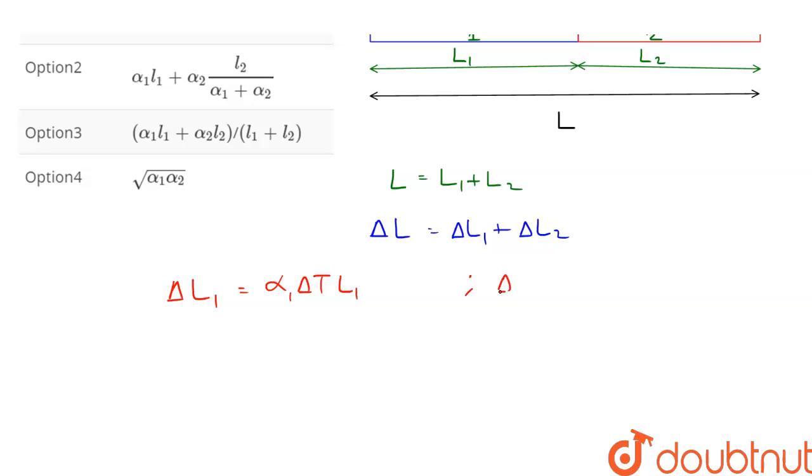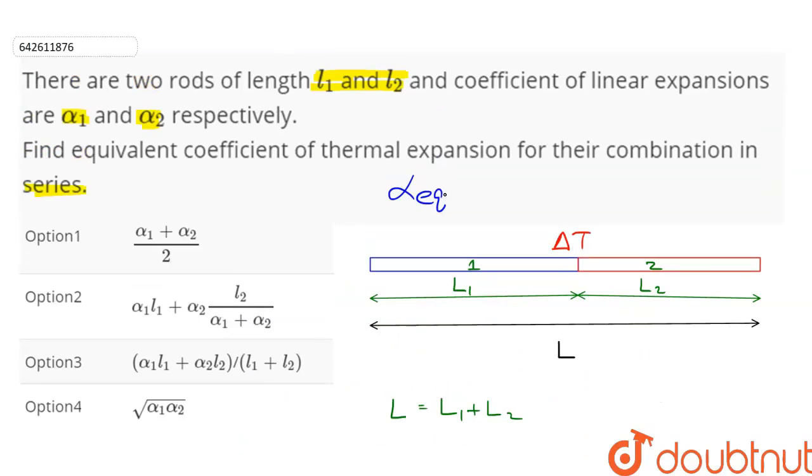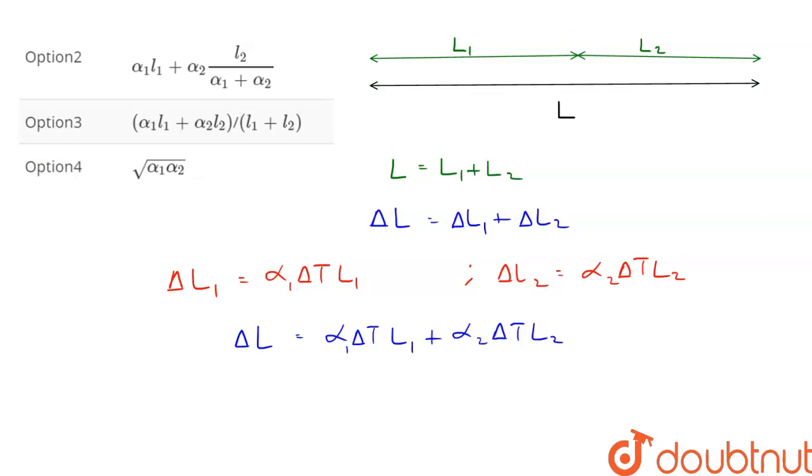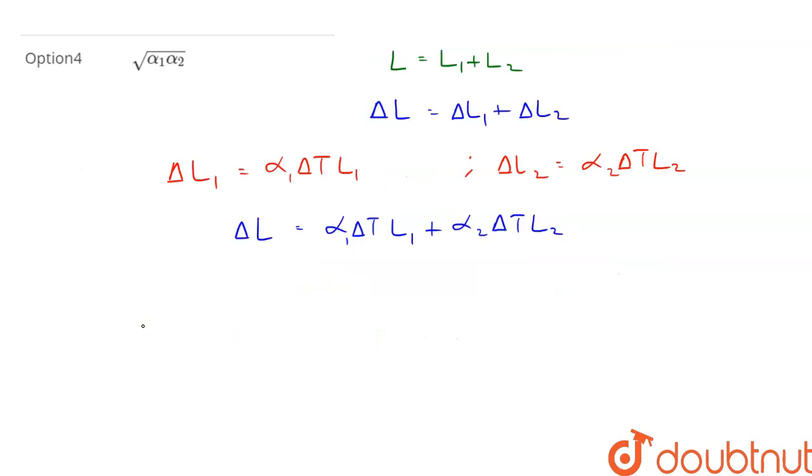and ΔL₂ equals α₂ΔT times L₂. So ΔL equals α₁ΔT·L₁ plus α₂ΔT·L₂. Now we can write the change in length ΔL